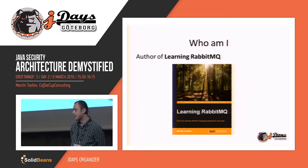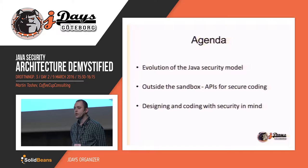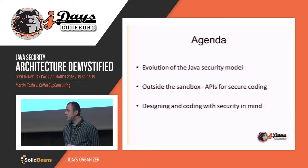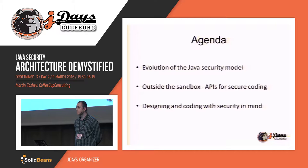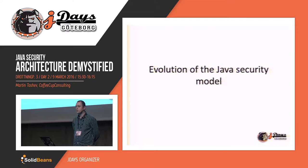About this talk: we'll track the evolution of the Java security model. This is knowledge which is essential to every Java developer, whether he's working in the field of application server development or not. Then we'll discuss what are the security APIs in the JDK platform that fulfill the security portfolio of Java. And at the end of the talk, we'll cover a few best practices that every Java developer must consider.